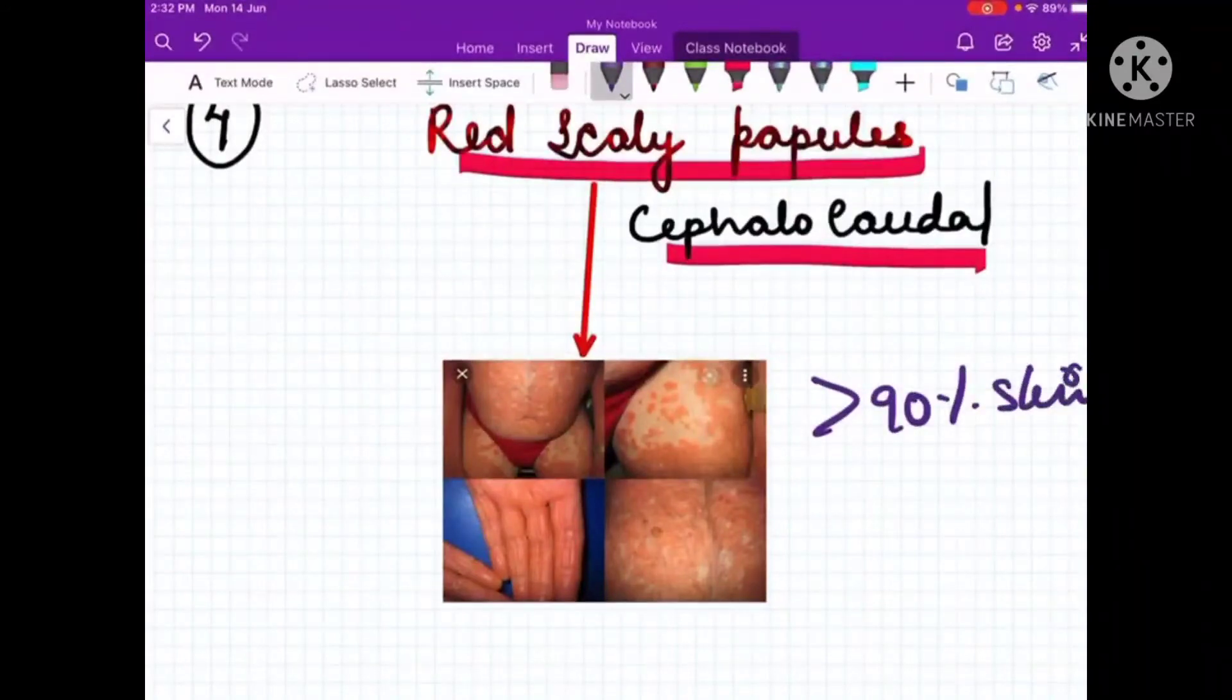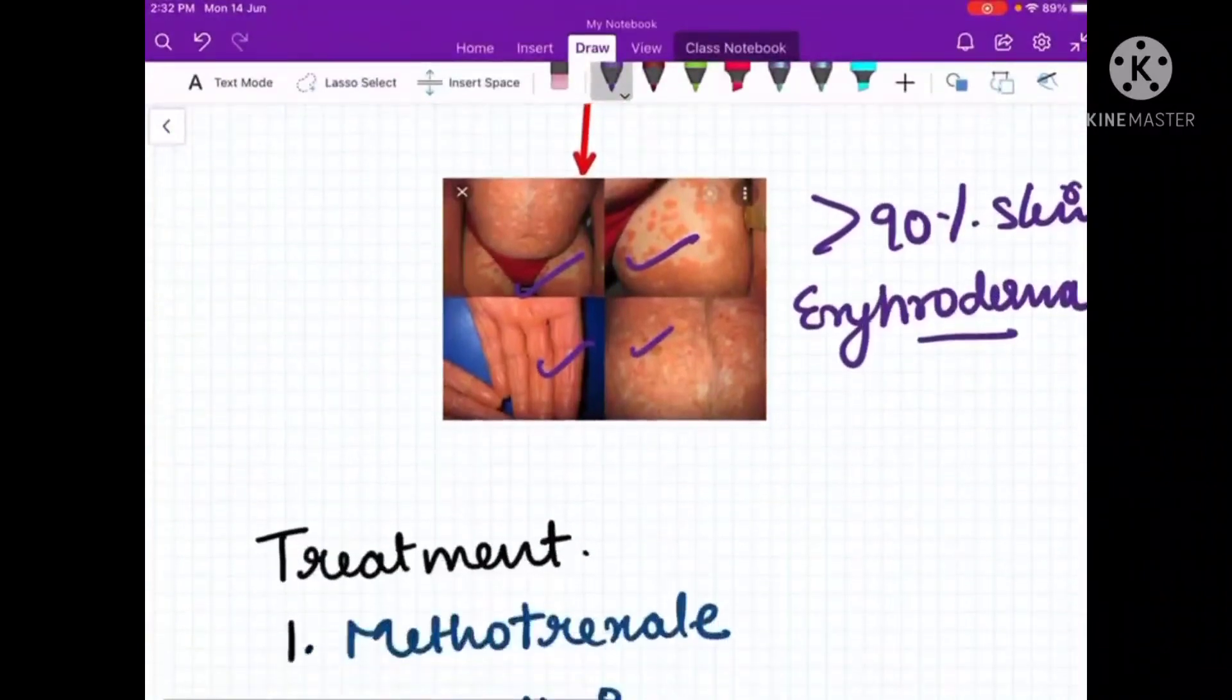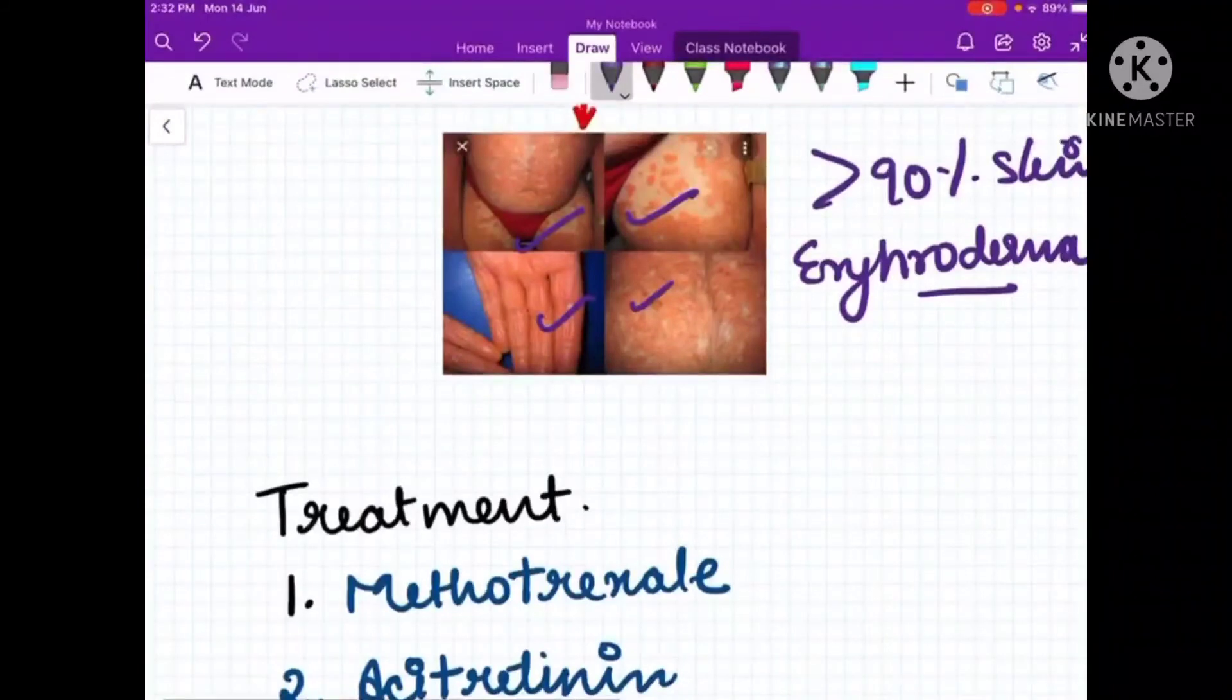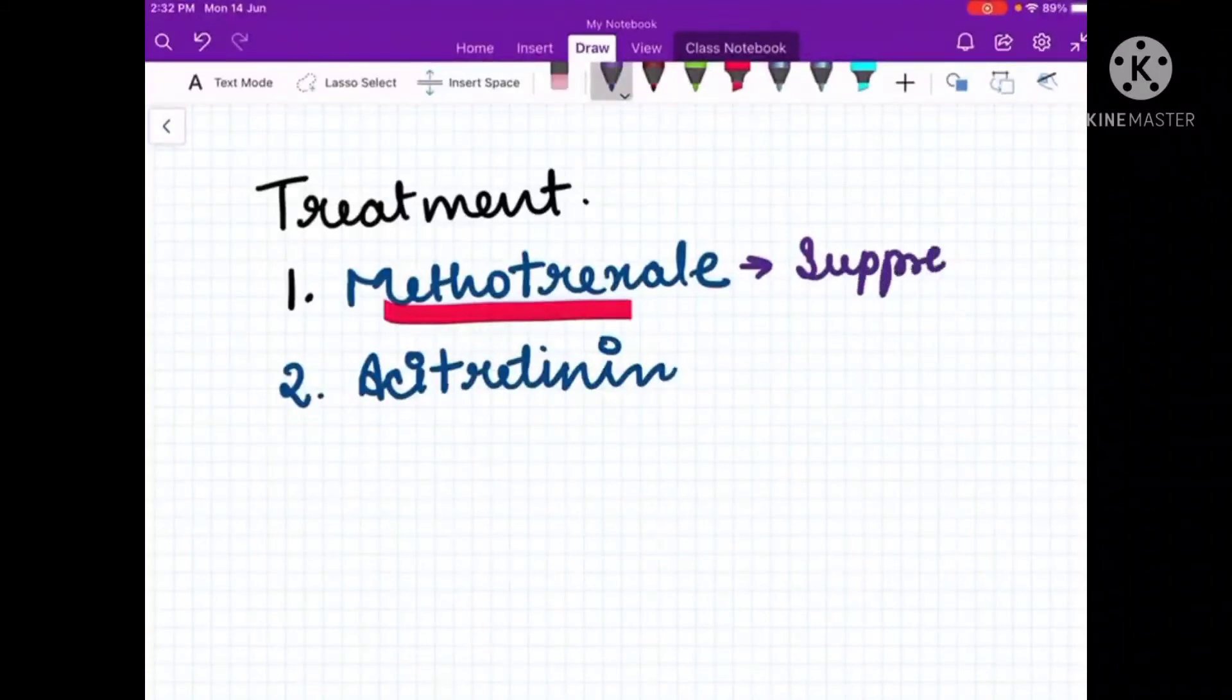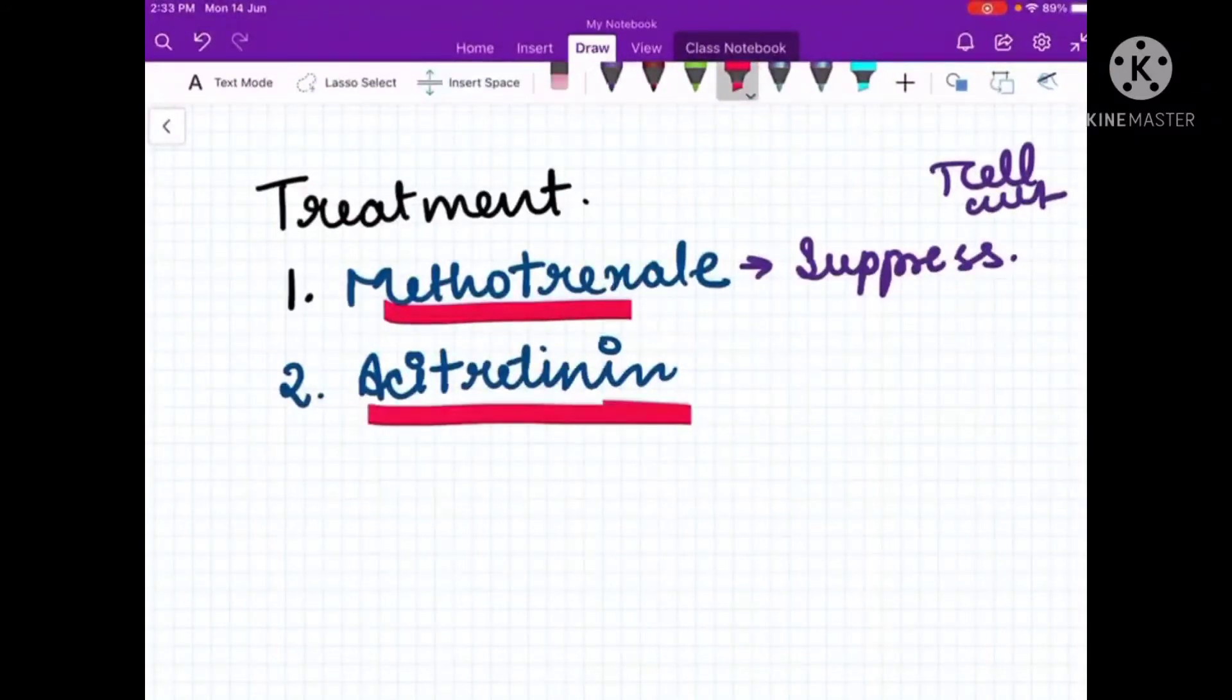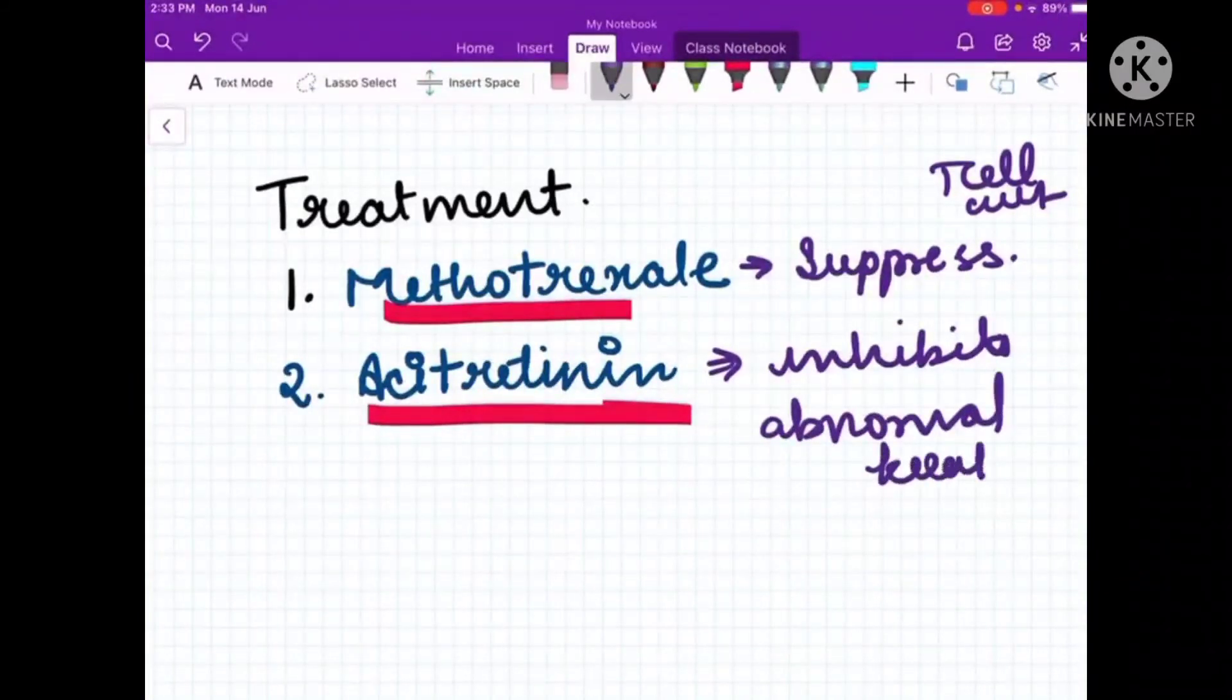The treatment for this erythroderma involves two important drugs. First is methotrexate, which suppresses the immunity. As we discussed earlier, it's a T-cell mediated autoimmune condition, so it suppresses that. Secondly, we have acitretin. Acitretin inhibits the abnormal keratinization.